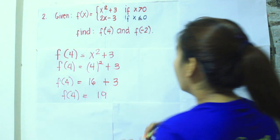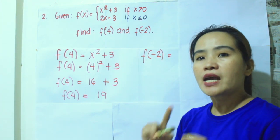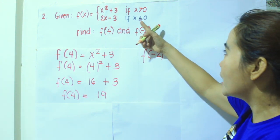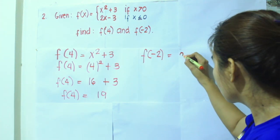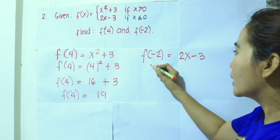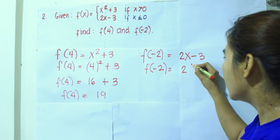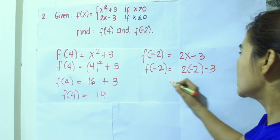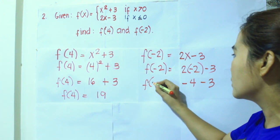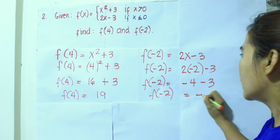For f of negative 2: negative 2 is less than or equal to 0, so we use the sub-function 2x minus 3. Replacing x by negative 2 gives 2 times negative 2 minus 3, which equals negative 4 minus 3, which is equal to negative 7.